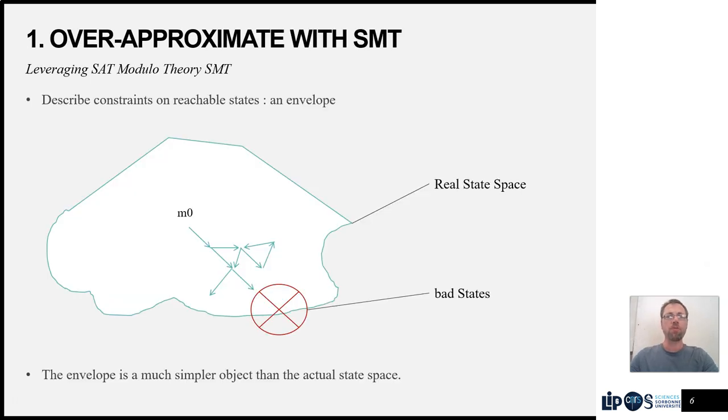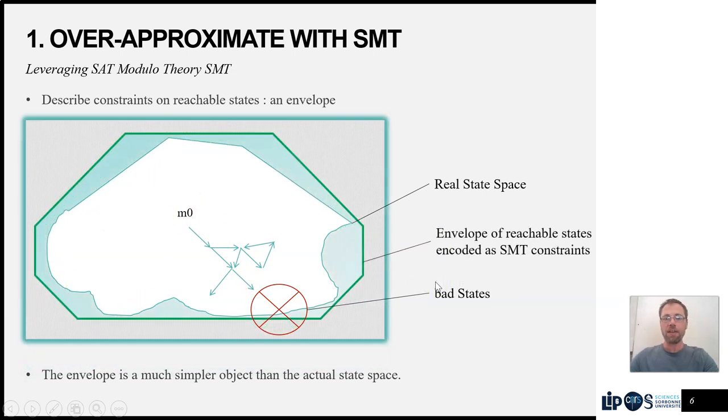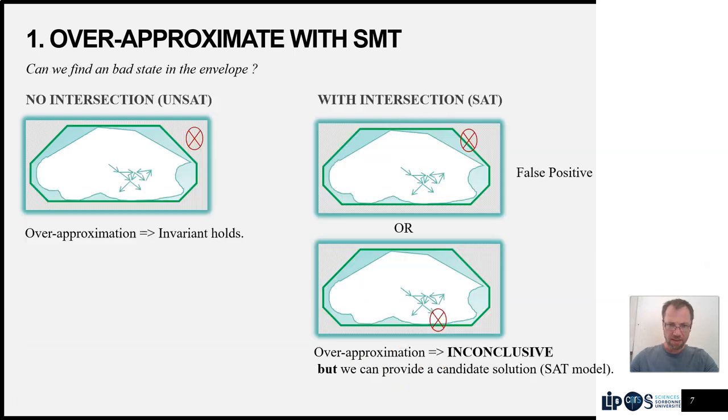Let's start with the over-approximation using SMT. The idea here is that rather than considering this very complex real state space object, we can try to compute a kind of envelope of these states such that all reachable states are within the envelope. This could be a much smaller and simpler object than the actual state space.